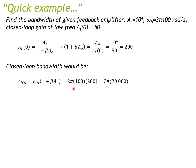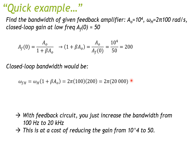So the closed loop bandwidth ωfH = open loop bandwidth × (1 + βA₀), which gives 2π × 20,000 rad/s. In other words, with the feedback circuit, the bandwidth increases from 100 Hz to 20 kHz — a significant extension. However, this comes at a cost: the gain is reduced from 10^4 down to 50.